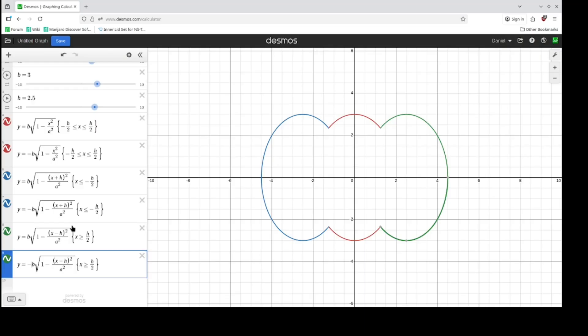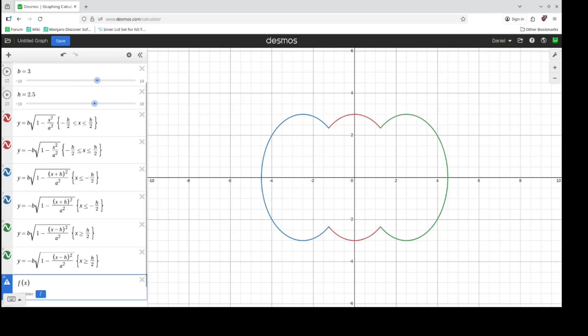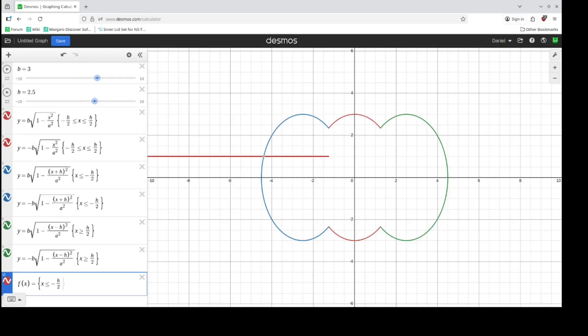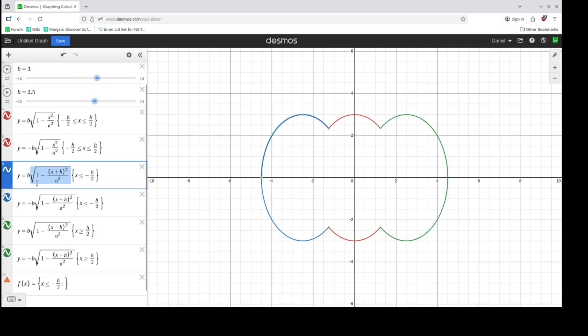Now we're going to get a little fancy by converting these into piecewise functions. We'll make one that defines the top half, and the bottom would simply be the negative of that. To make a piecewise function, let's call it f of x just so that we can use it again. Let's say for x being less than or equal to minus h over 2, we're going to use this equation here—I know we're going to use this blue ellipse. Copy it, we'll paste it in.